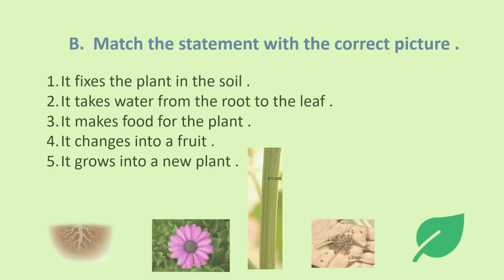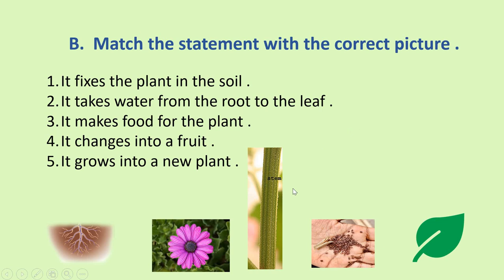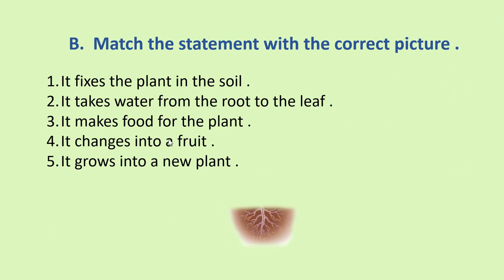Okay, now let's move to B part. In this, you have to match the statement with the correct picture. See here, 5 pictures are given below and 5 statements are here. First is, it fixes the plant in the soil. It takes water from the root to the leaf and keep in your mind, you have to match. Okay, it makes food for the plant. It changes into a fruit. It grows into a new plant. So, first point is, it fixes the plant in the soil. What is it? These are called roots.